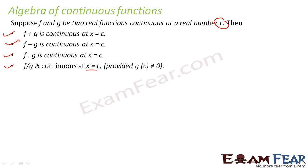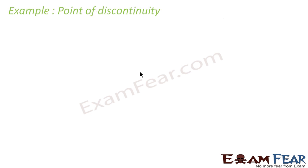To summarize: if f and g are both continuous at x equal to c, then f plus g, f minus g, and f into g are all continuous at x equal to c. Also f by g is continuous at x equal to c, provided g is not equal to 0 at point c.